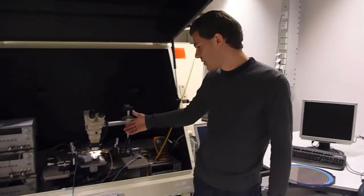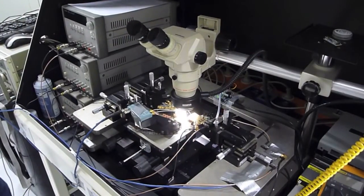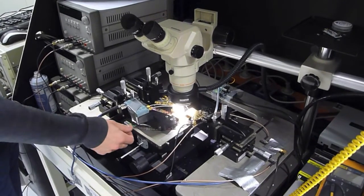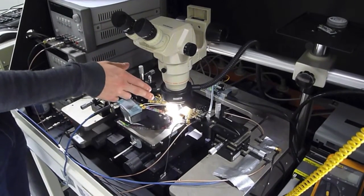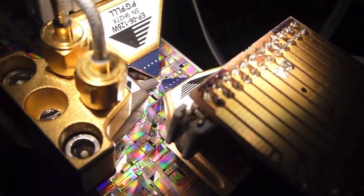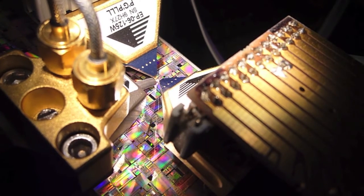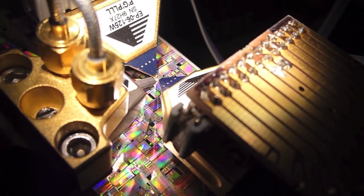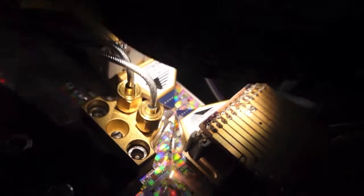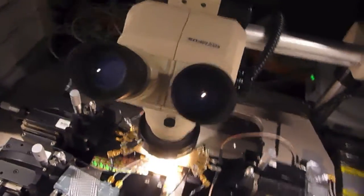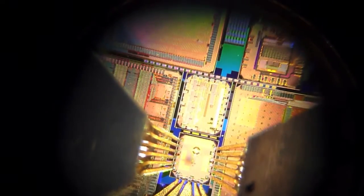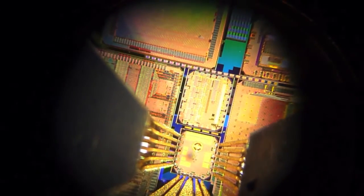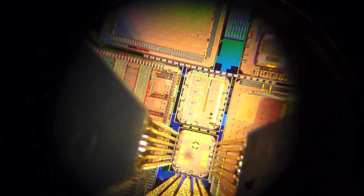To test the chips on these wafers, we use these probe stations. These probe stations consist of a plateau with the wafer on top and a microscope to check the positioning of the needles to measure the chip. Here you can see the probe heads with the needles contacting the chip, which are too small to see on this scale. When we look through the microscope, we can now see the needles contacting the chip.